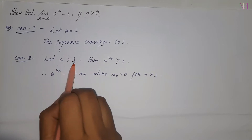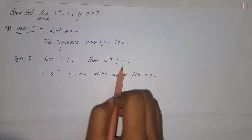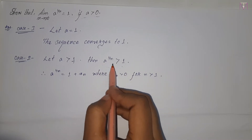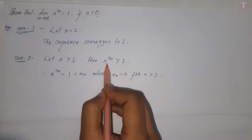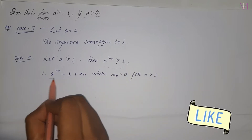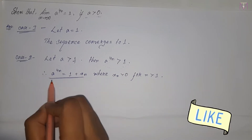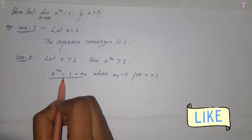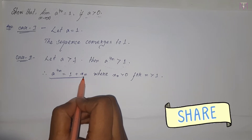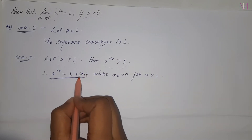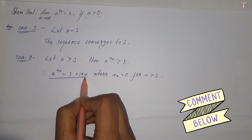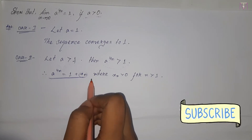Since a is greater than 1, then a to the power 1 by n is greater than 1. So if a to the power 1 by n is greater than 1, we set these two terms equal and assume a to the power 1 by n equals 1 plus x_n, where x_n is greater than 0 for all n greater than 1.